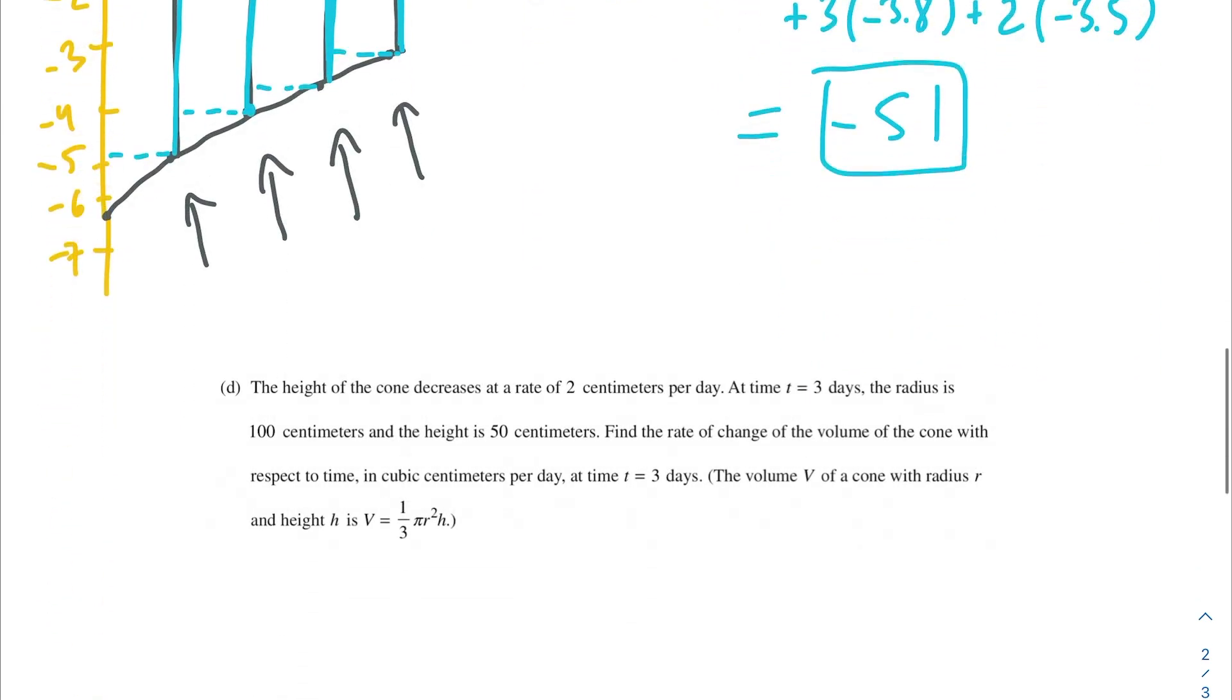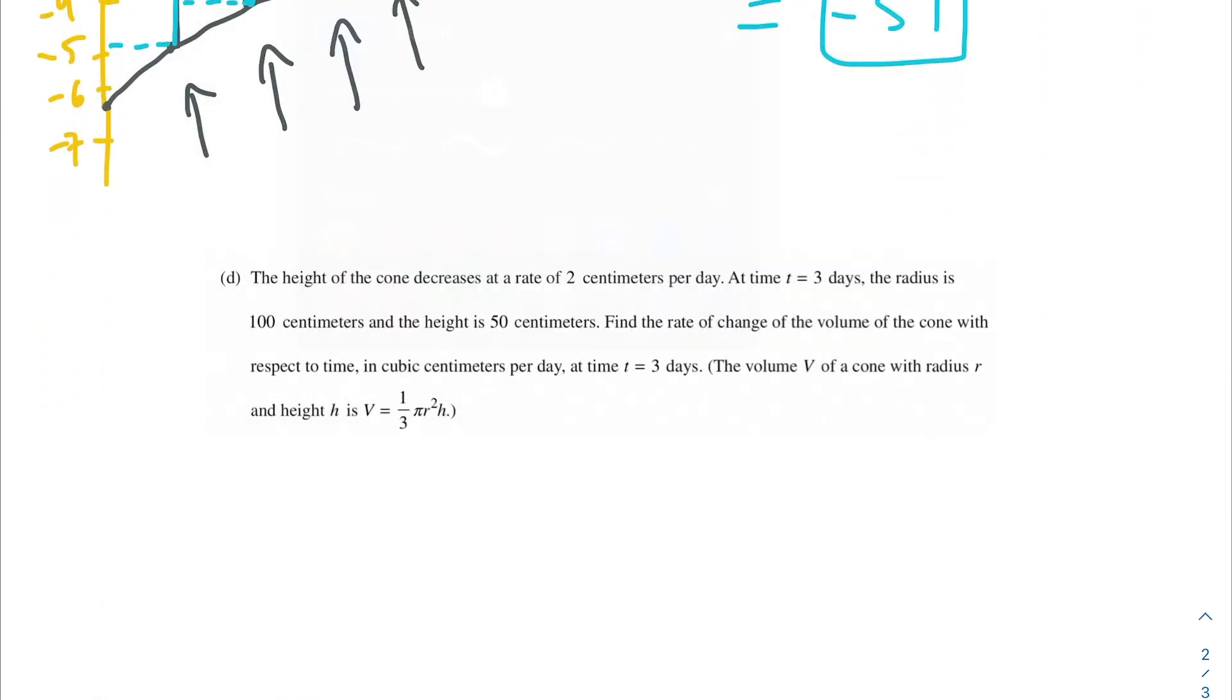Moving on to the next problem, we have the height of a cone decreases at a rate of 2 centimeters per day. At time t = 3 days, the radius is 100 centimeters and the height is 50 centimeters. Find the rate of change of the volume of the cone with respect to time in cubic centimeters per day at time t = 3 days. And then it tells us the volume of a cone, which is good, because I mean, honestly, who has memorized that equation? Definitely not me. So the volume V of a cone with radius r and height h is equal to (1/3)πr²h.